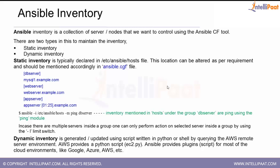Welcome to today's session on Ansible. On the screen we have the typical structure of an inventory. In square brackets we have DB server, web server, and app server — these are different groups inside the inventory. Inside each group we have specified a particular server name. That's the way inventories are declared.